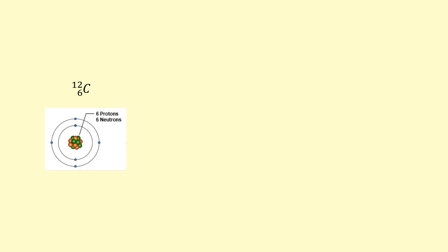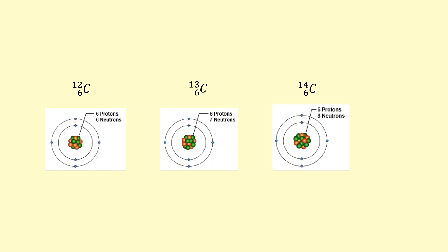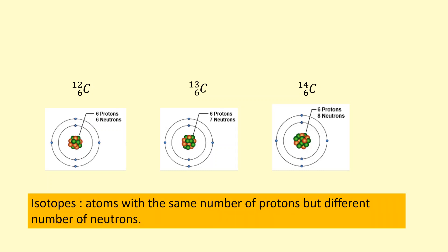Here we have a Carbon-12 nucleus, here we have a Carbon-13 nucleus which has an extra neutron, and here is Carbon-14 which has two extra neutrons compared to Carbon-12. These are what we call isotopes — they have the same number of protons, which is why they're carbon, but they have different numbers of neutrons.